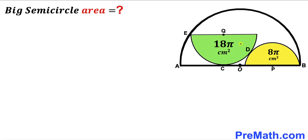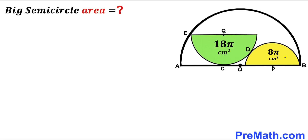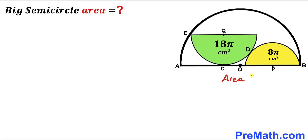Welcome to pre-math. In this video, we have got two semicircles — the green one and the yellow one — fully inscribed in a big semicircle with center O, as you can see in this diagram. The center of the green semicircle is Q, and its area is 18π cm². The center of the yellow semicircle is P, and its area is 8π cm². Both semicircles are tangent to each other at point D, and the diameter of the big semicircle is AB. Our task is to calculate the area of this big semicircle.